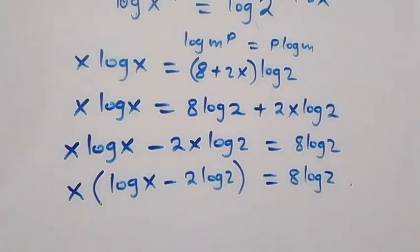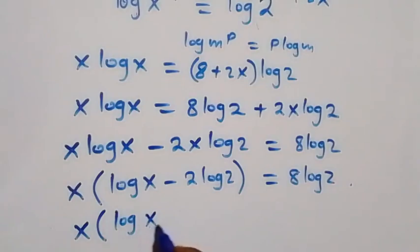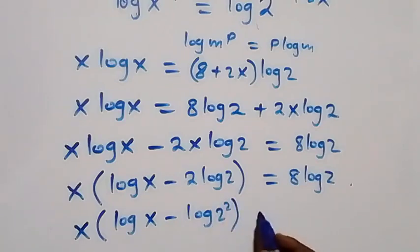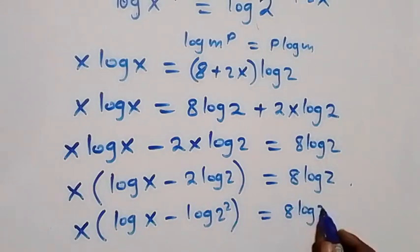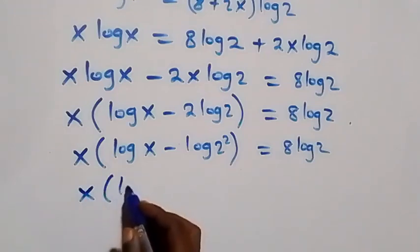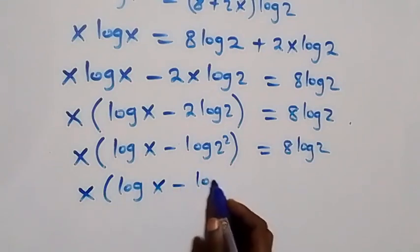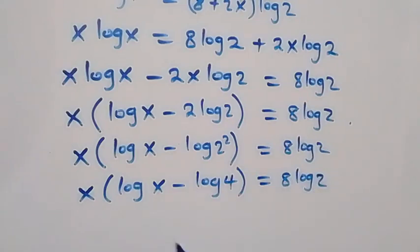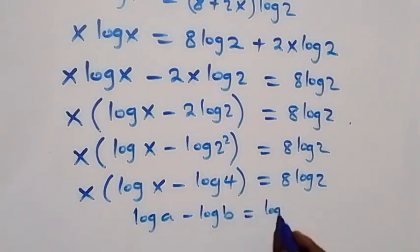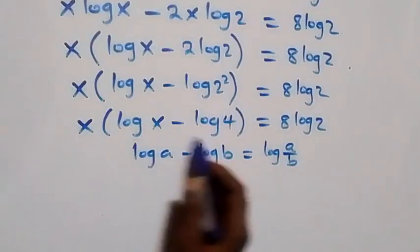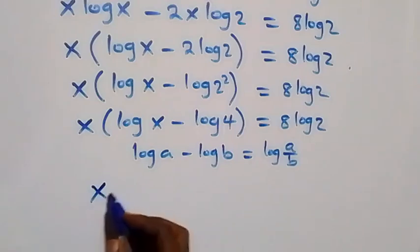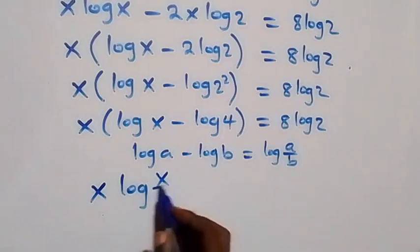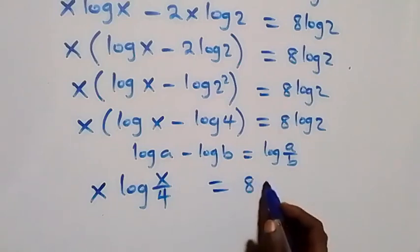We reverse the power law of logarithm: 2 log 2 becomes log 2 squared, so we have x into bracket log x minus log 2 squared, equals 8 log 2. This simplifies to x into bracket log x minus log 4, equals 8 log 2. From the law of logarithm, log A minus log B equals log A over B, so this becomes x multiplied by log of x over 4, equals 8 log 2.